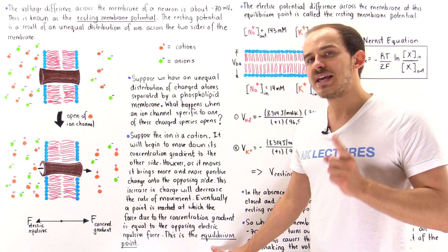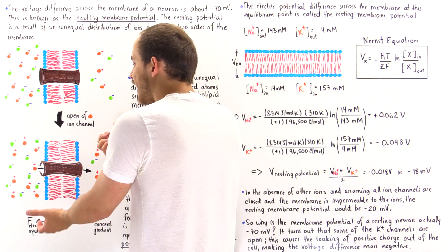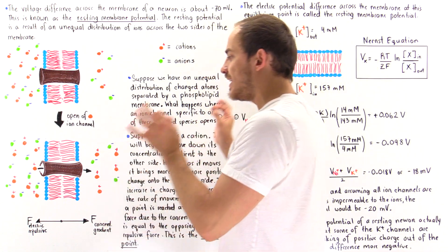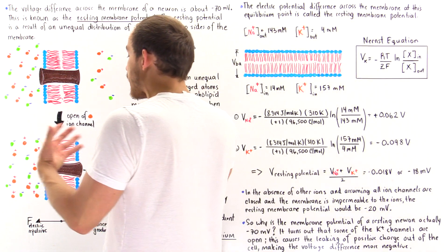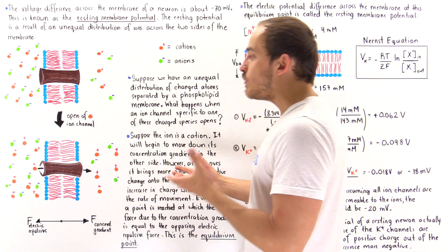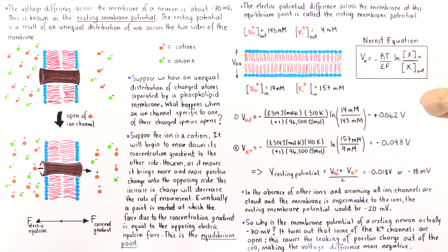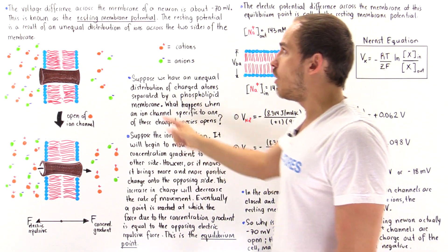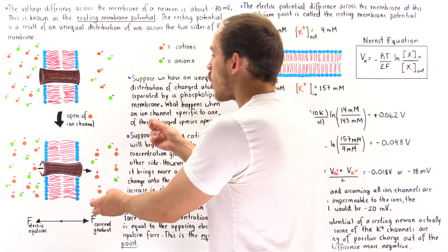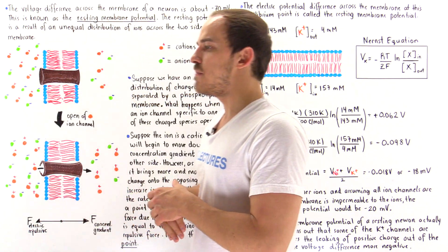This moment in time is known as the equilibrium point. When these cations reach their equilibrium point, there will still be an unequal distribution of these ions. At that moment, we can calculate exactly what that voltage potential difference is between the two sides of the membrane. If we carry out the same procedure with the other ions and take the average of those values, that gives us the resting membrane potential — the electric potential difference across the membrane at the equilibrium point.